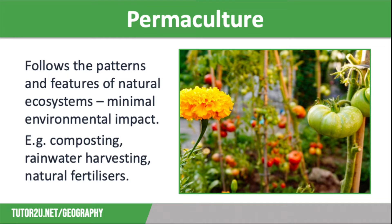Permaculture practices include crop rotation, keeping animals like sheep and pigs, and managing woodland. It also uses natural predators like ladybirds instead of chemical pesticides, and natural fertilisers such as manure to add nutrients to the soil.